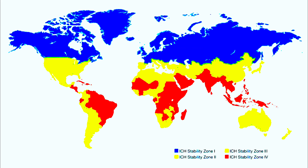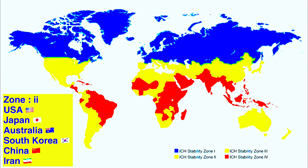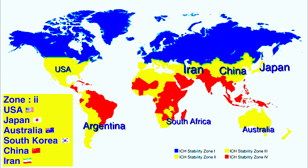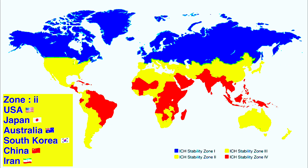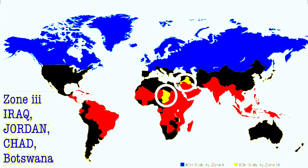Zone 2 is shown in yellow, and the countries that fall under zone 2 include USA, China, Japan, Australia, South Africa, Israel, Iran, North Korea, South Korea, etc. Zone 3 countries include Iraq, Jordan, Chad, Botswana, etc. — only a few countries come under zone 3.